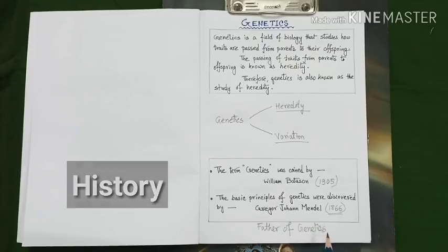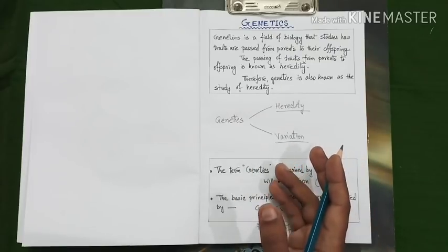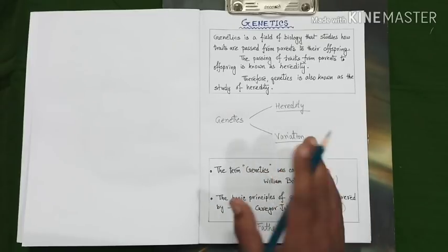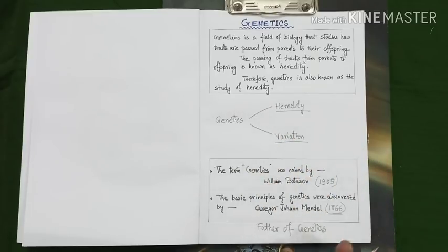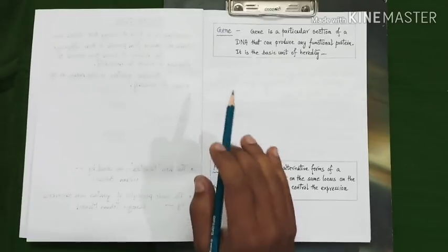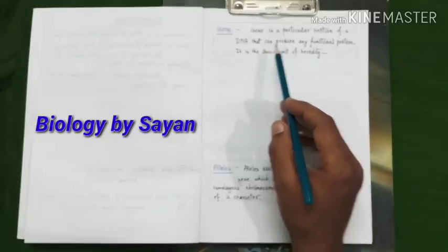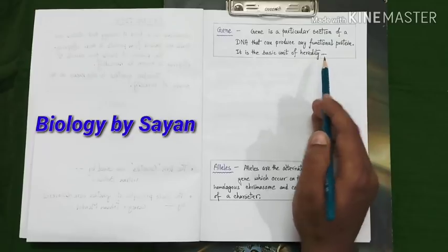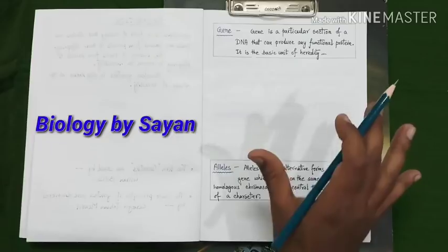We will discuss details about Mendelism in our later class or later video. Now, to get a clear idea about genetics, we should know about the definition of gene, its exact location, its nature of expression, and variations among them. So let's move on to those topics. Let's know about gene. What is gene? Gene is a particular section of a DNA that can produce any functional protein. It is the basic unit of heredity. Prior to knowing details about gene, we need to know about its location — where the gene actually resides.